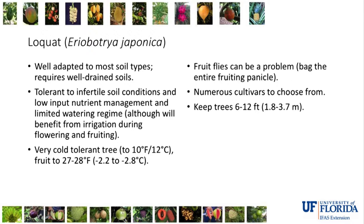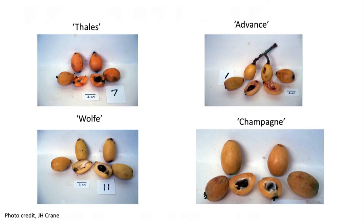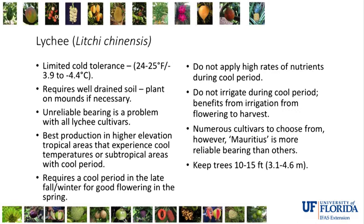Loquat is a cool subtropical species that is very cold tolerant. There are numerous cultivars to choose from, though not always readily available. This tree can be kept rather small. There are some fruit fly problems with loquat, and people can bag the fruit to protect it, though that is labor intensive. Lychee, a relative of longan, also requires a cool period to flower and fruit well, is low nutrient, and keeping the tree smaller allows you to put more trees per unit area and keep production lower in the canopy.